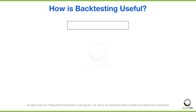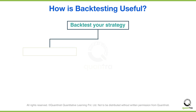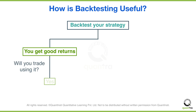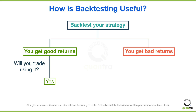If you have backtested your strategy on historical data and it is giving good returns, you will be confident to trade using it. But if your strategy is performing poorly on the historical data, will you trade using that strategy? No. You would simply discard your strategy or rethink about your strategy.